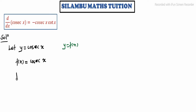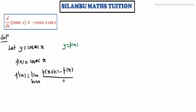That is f dash of x is equal to limit h tending to 0, f of x plus h minus f of x, divided by h.